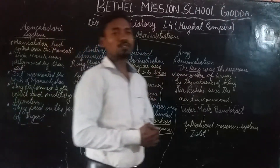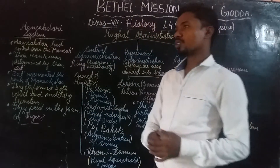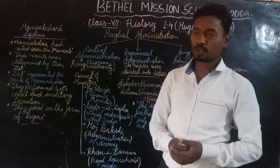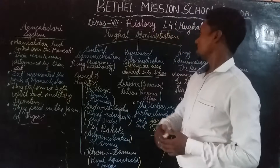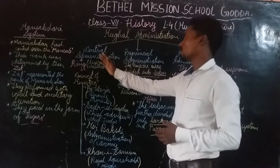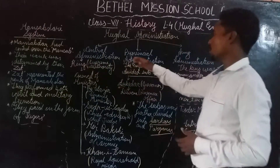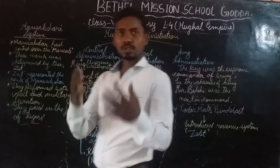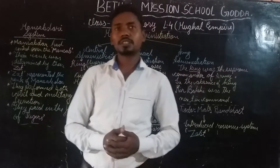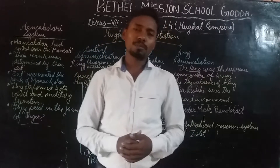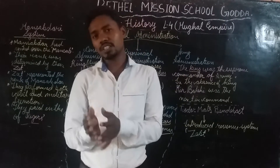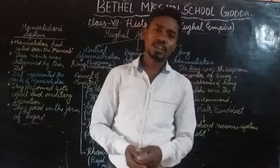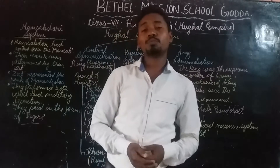We will be dealing with the administration of the Mughal Empire — what type of administration system the kings of this chapter used to follow. Mughal administration was divided into three parts: the central administration, the provincial administration, and the revenue administration. As in the present time we have two types of governments — one working at the center and one at the state — the same type of administration was used in those days also.